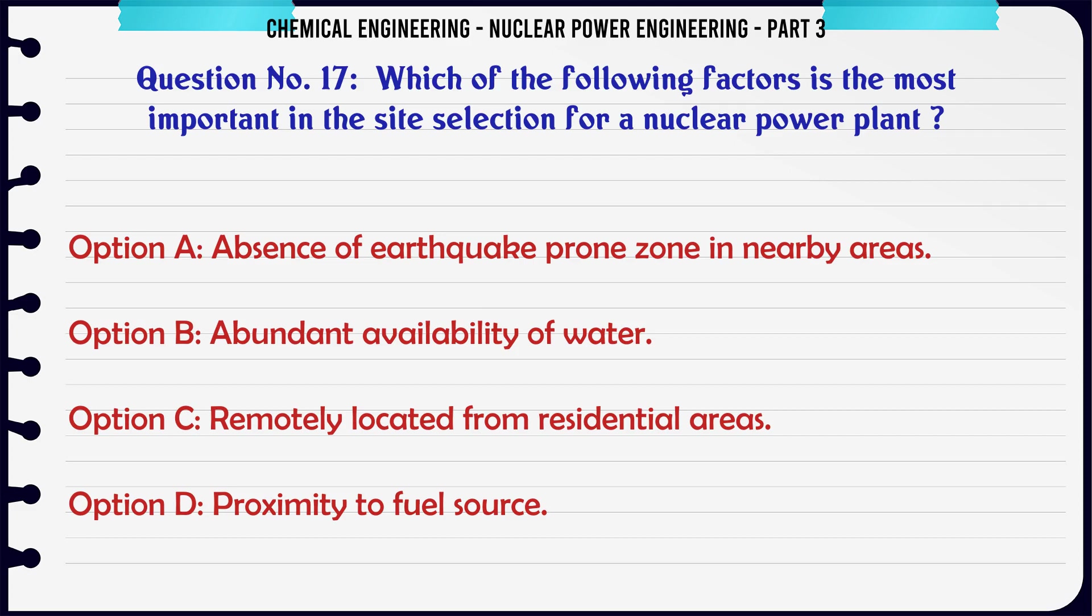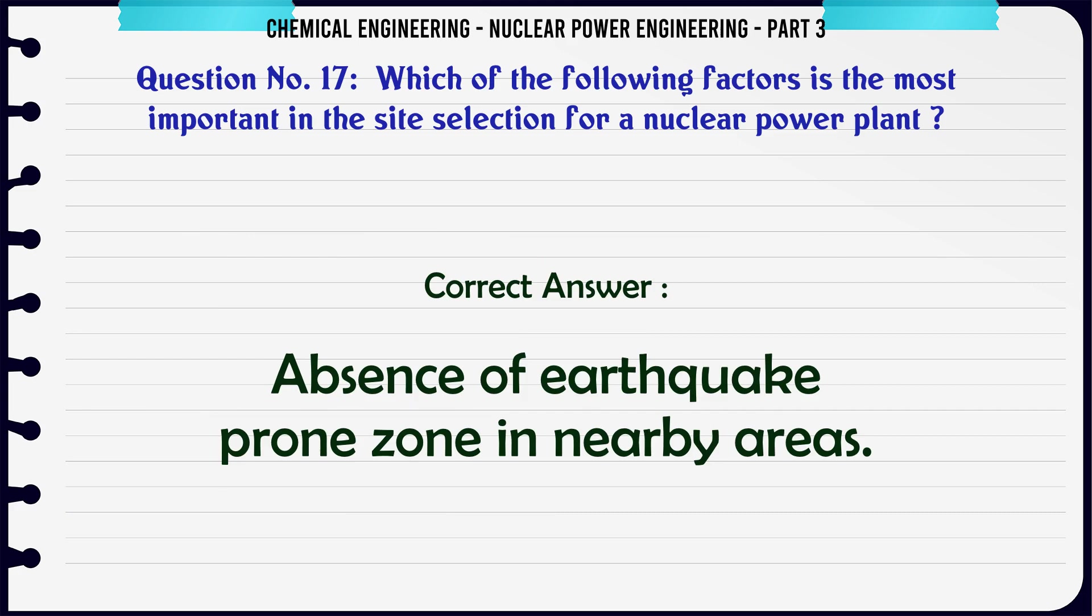Which of the following factors is the most important in the site selection for a nuclear power plant? The correct answer is absence of earthquake-prone zone in nearby areas.